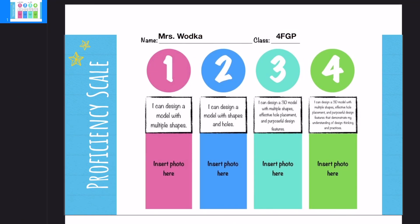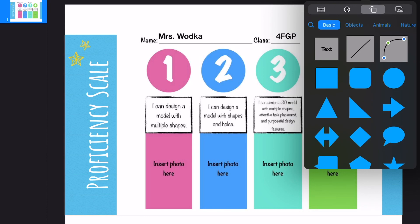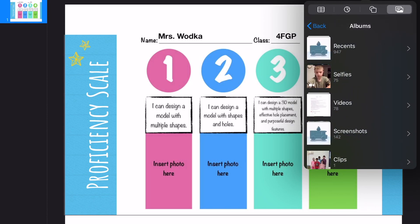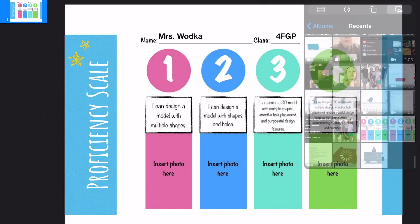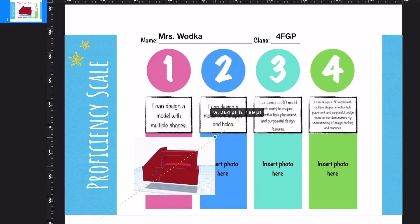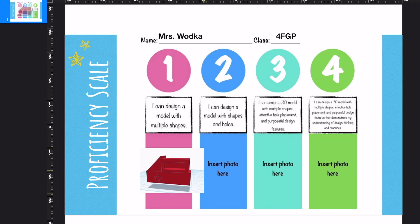Once you have your name and your class code on your proficiency scale, what you are going to do is you are going to add a photo. Now these are photos that you should have been taking while you were creating your food truck. And so I'm going to go ahead and add this one in here as an example of a food truck where I had multiple shapes.